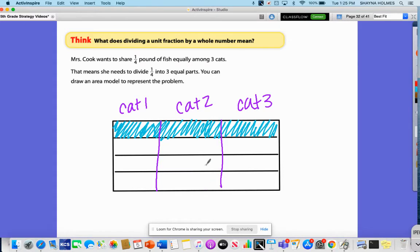Now this model is different. The denominator was four, but now that I've divided it into three sections, I have a different denominator. So I'm going to count these up: 1, 2, 3, 4, 5, 6, 7, 8, 9, 10, 11, 12.